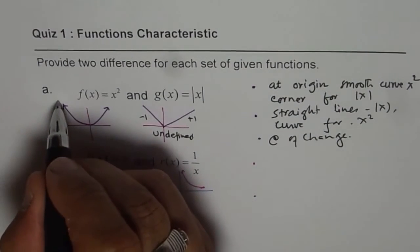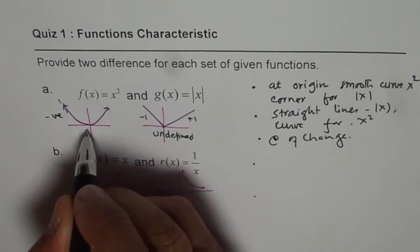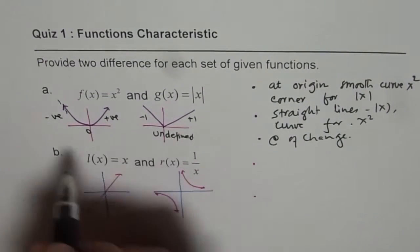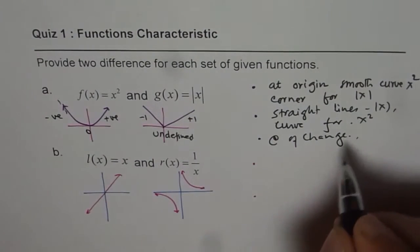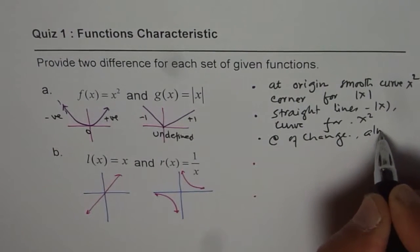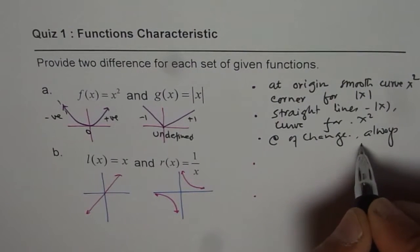Or it is positive one. In this case, rate of change is negative, zero and positive. So always increasing. For x squared, it is always increasing.